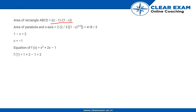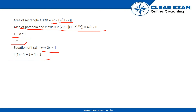The area of the region between the parabola and the x-axis can be computed using base times height, which involves |c − 1| and √(1 − c). Using the area condition 4√8/3, we find c = −1. So the equation is f(x) = x² + 2x − 1, and f(1) = 1 + 2 − 1 = 2.